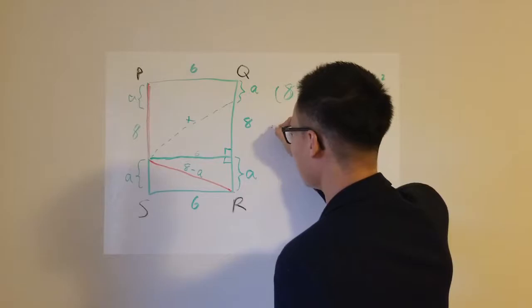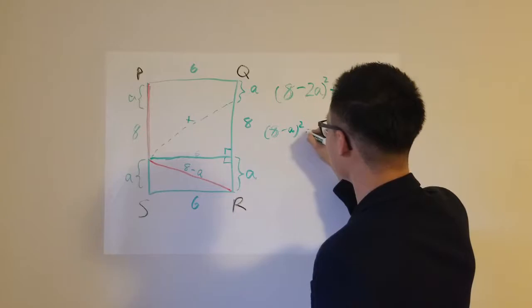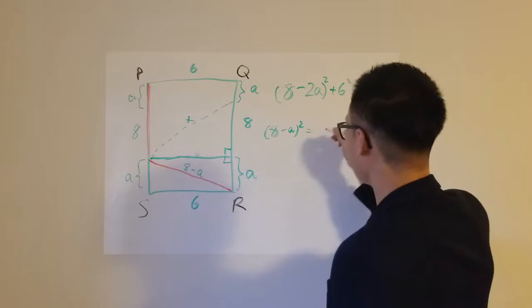I know that by Pythagorean theorem, the hypotenuse squared, when you square the hypotenuse, it is equal to the sum of the squares of the two short lengths, which are a squared and six squared.